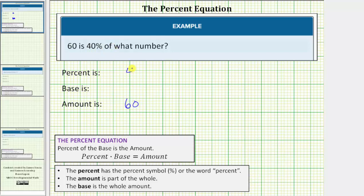The percent is 40%, and the whole amount is the unknown, which is called the base. Let's use the variable b to represent the base. Now we'll write the percent equation. The percent is 40% times the base, which is the unknown, so times b equals the amount, which is 60.